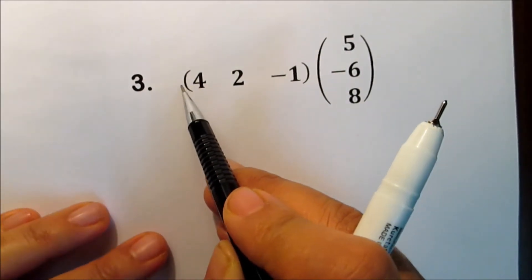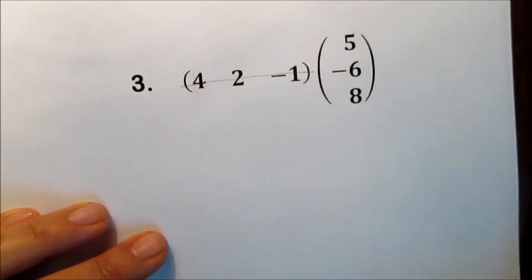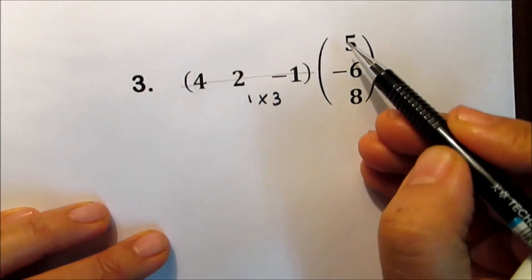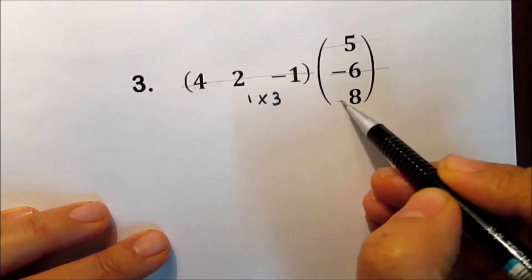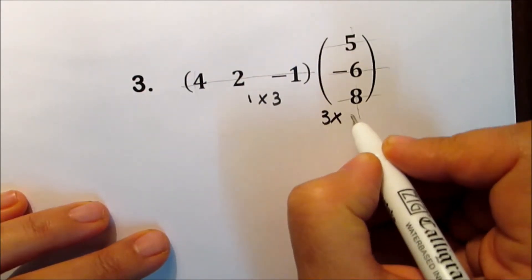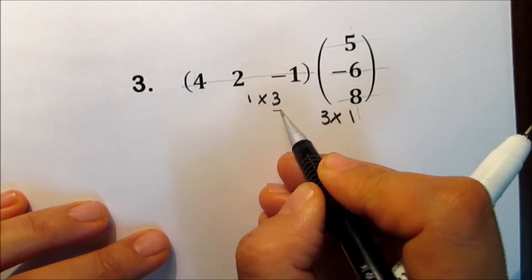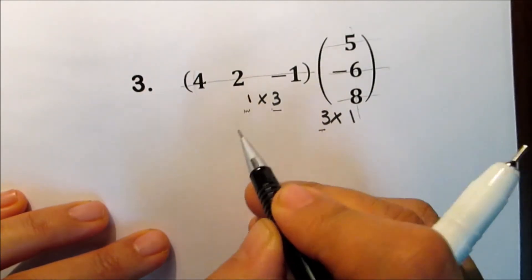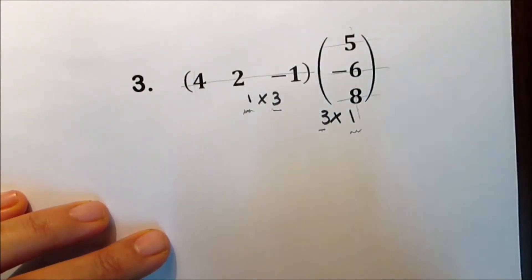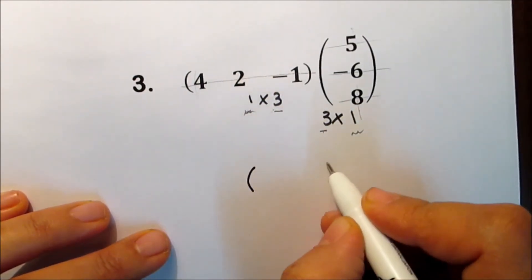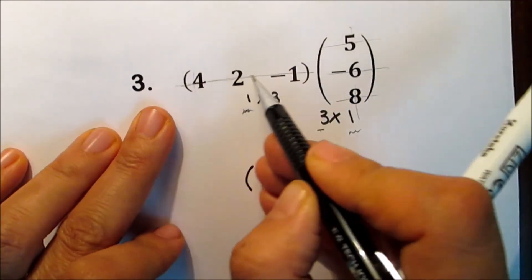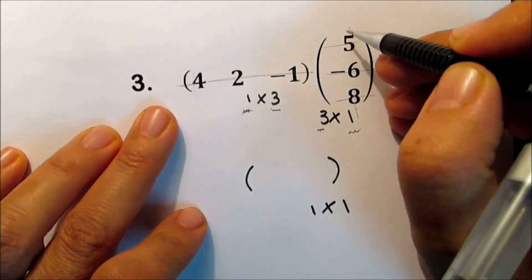The first has one row and three columns, so it's a 1 by 3 matrix. The second has three rows and one column, so it's a 3 by 1 matrix. Check that the two inside numbers are the same. The order of the new matrix is 1 by 1, so the new matrix has only one element — it's 1 by 1. Take the first row with the first column.